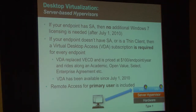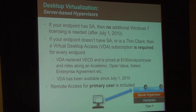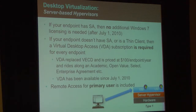For desktop virtualization: if you're using View or XenDesktop — anything running virtual machines with Windows inside — you pretty much have to have SA or VDA. There's really no other compliant way to do it. If you have SA today, you don't need to buy anything additional to access a virtual machine running in a data center. Software Assurance gives you the ability to connect to up to four VMs at any given time.